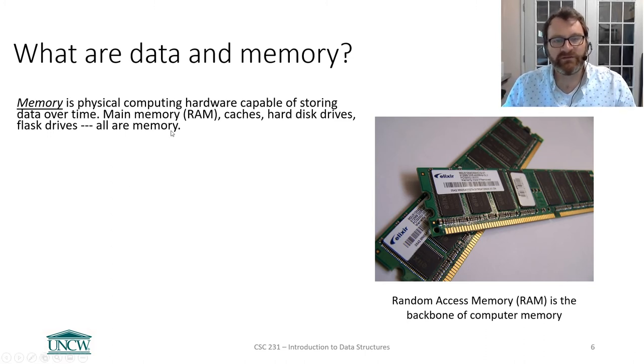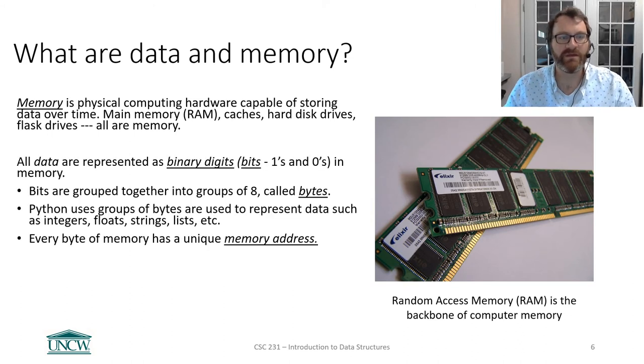Memory is physical hardware. It is capable of storing data over time. And that's the key to memory. Memory retains things over time. Your CPU, when it's running instructions, doesn't retain the value. It needs a place to keep it and to put it. Main memory, caches, hard disk drives, flash drives. These things are all memory. But they're physical things.